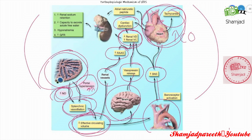The atrial natriuretic peptide will be released from the atria to manage the extracellular fluid. As a result of all these processes, the kidney will get more and more exhausted. Finally, there is increased renal sodium retention and decreased capacity to excrete solute-free water. Hyponatremia is mainly dilutional, and decreased GFR due to vasoconstriction causes increased serum creatinine, leading to renal impairment.